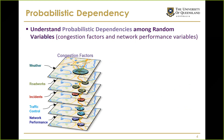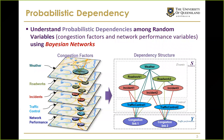The goal of this research is to systematically model the probabilistic dependencies among random variables, including congestion factors and network performance variables. Considering multiple layers of congestion factors — weather, roadwork, incidents, and so on — the particular approach taken is using the Bayesian network.